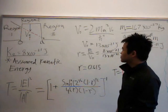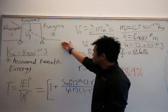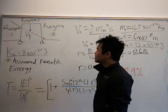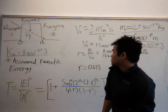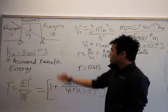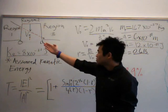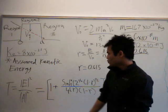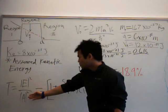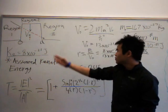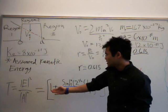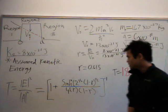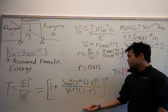Quantum tunneling can be described mathematically, as shown here. We have region 1, region 2, and region 3. We want to calculate the probability that our particle travels from region 1 to region 3. We have T, the probability that our particle will travel through region 1 to region 3, as E squared over A squared, which is equivalent to this equation here.